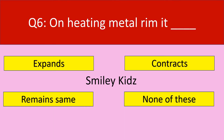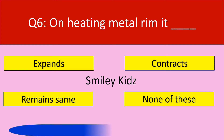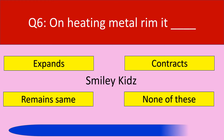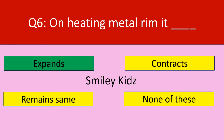Question number 6. On heating metal rim, it dash. Options are expands, contracts, remains same, none of these. Your time starts now. Your time is up and the correct answer is expands. On heating, the metal rim expands.